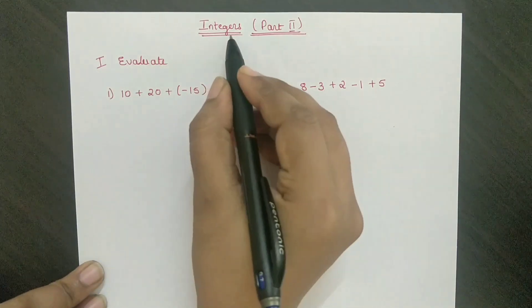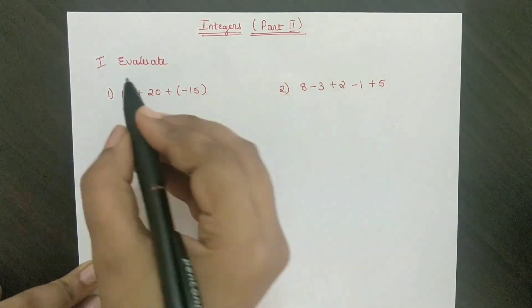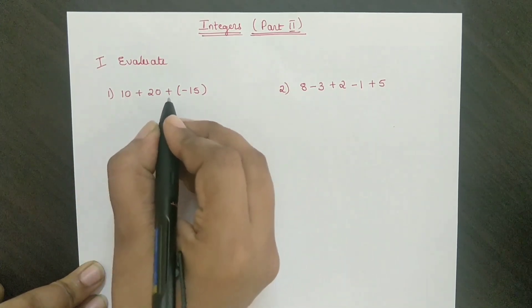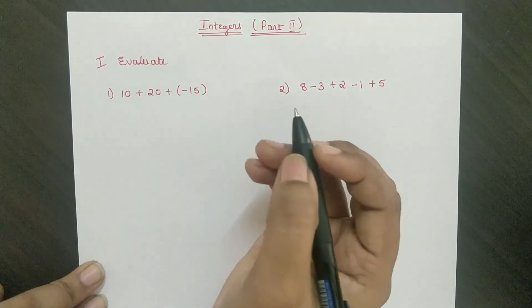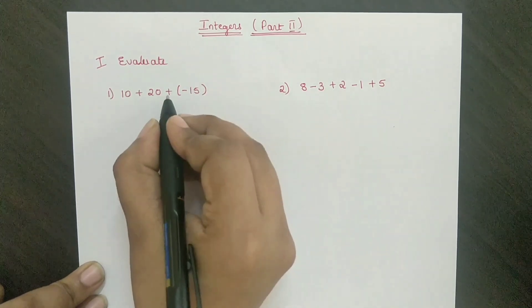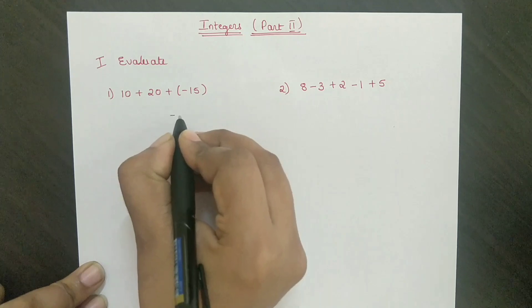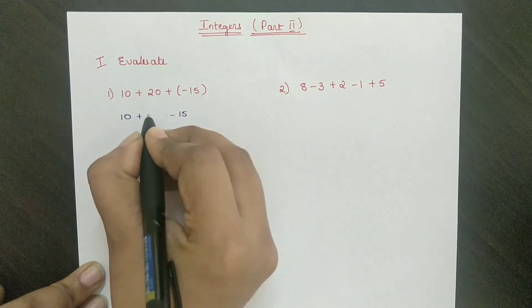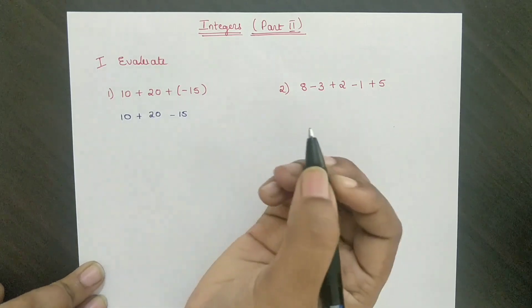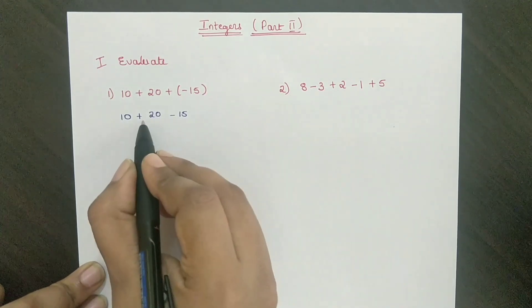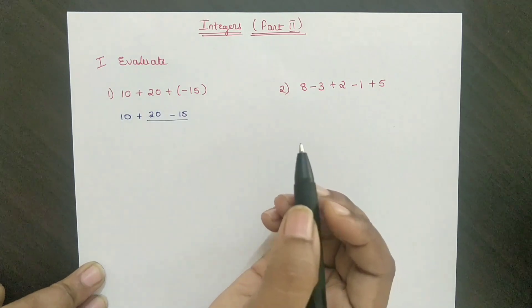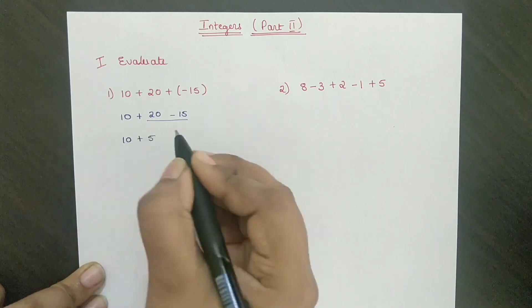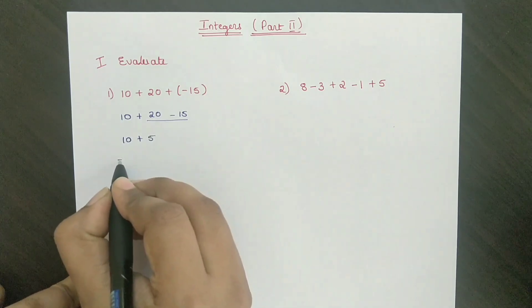Integers part 2. Evaluate the first problem: 10 plus 20 plus minus 15. If you see this, 20 minus 15 equals 5, then 10 plus 5 which is equal to 15.